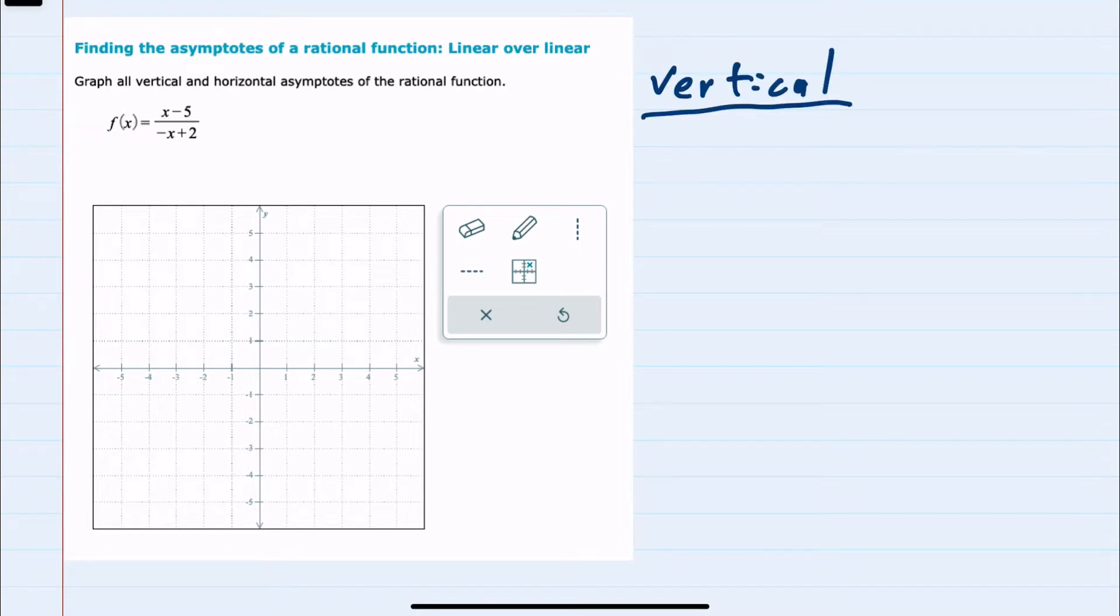To find the vertical asymptote, I first make sure that our function is in simplest form. So is there anything, especially any factors, in the numerator that will cancel in the denominator? And here the function is already simplified, there's nothing to cancel.